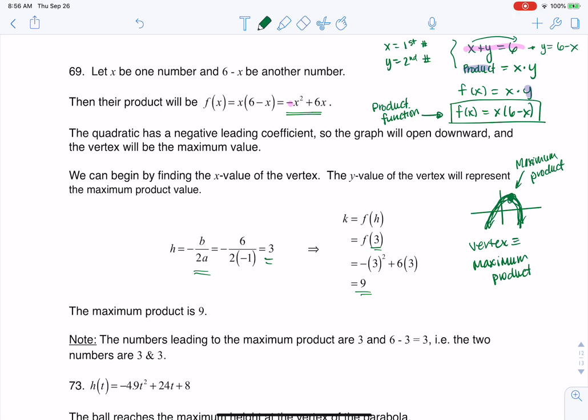So we have this equation that f(3) is equal to 9. I didn't do the greatest job graphing this, but imagine this was the ordered pair (3, 9). So it means when x is 3, the maximum product is 9.